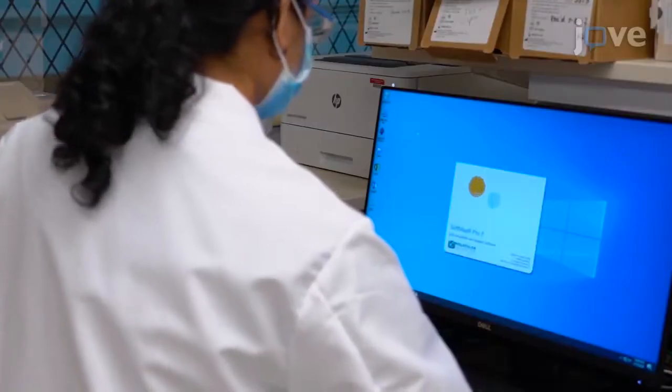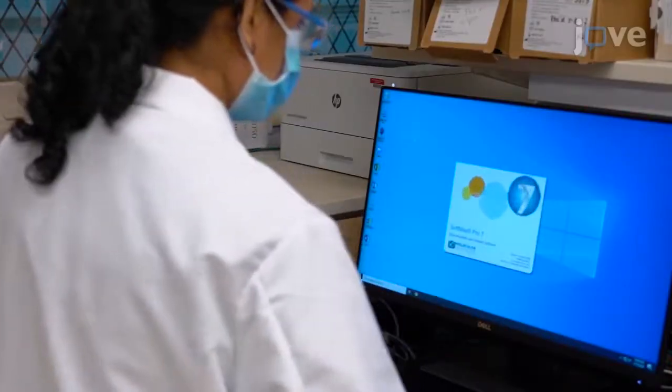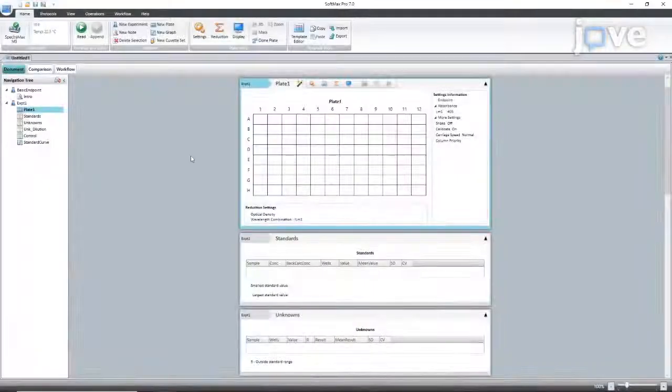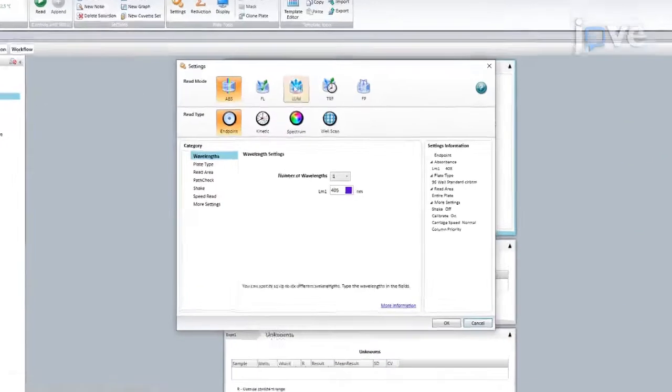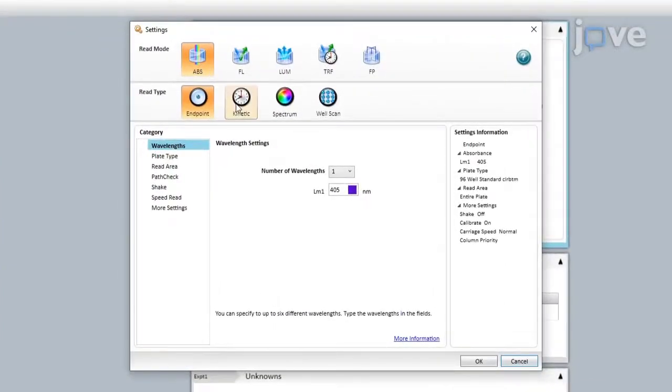Turn on the spectrometer and open the corresponding analysis software. Then select Plate 1 and open the Plate Settings tab. Click ABS and Kinetic to monitor dynamic absorbance over time.